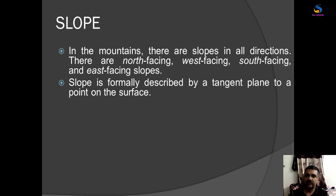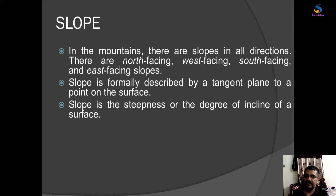If we are standing on a surface and we have a point at height, and we draw a tangent to that point, that is called a slope. Slope is the steepness or the degree of incline of a surface.